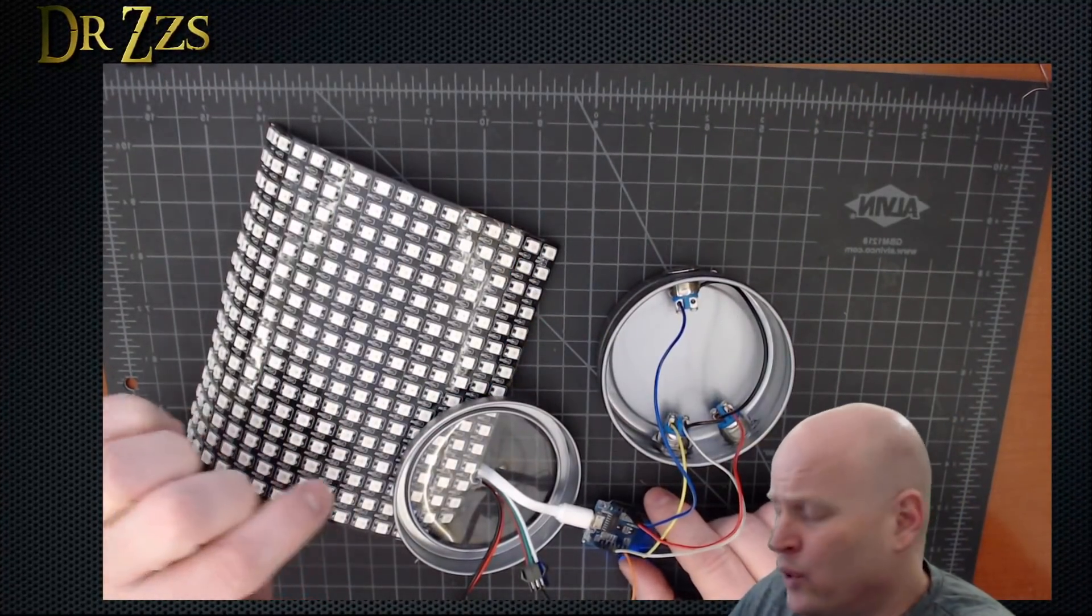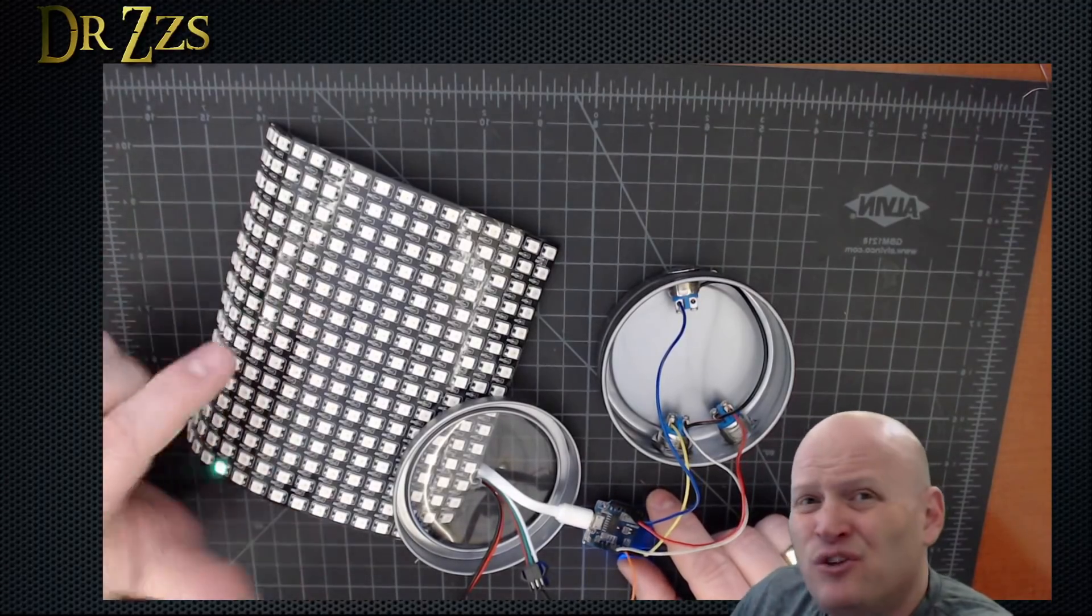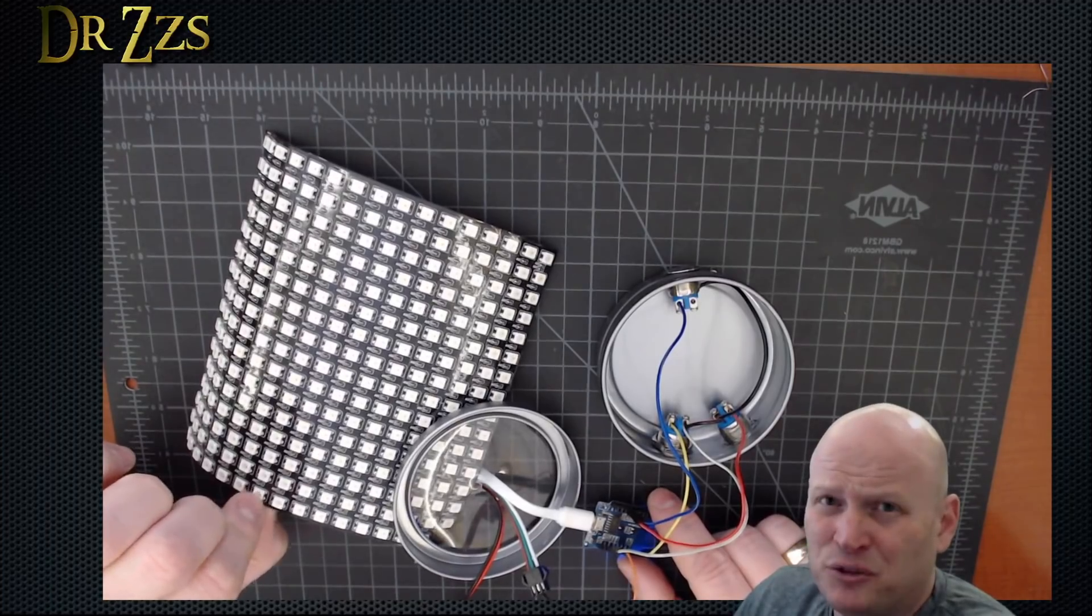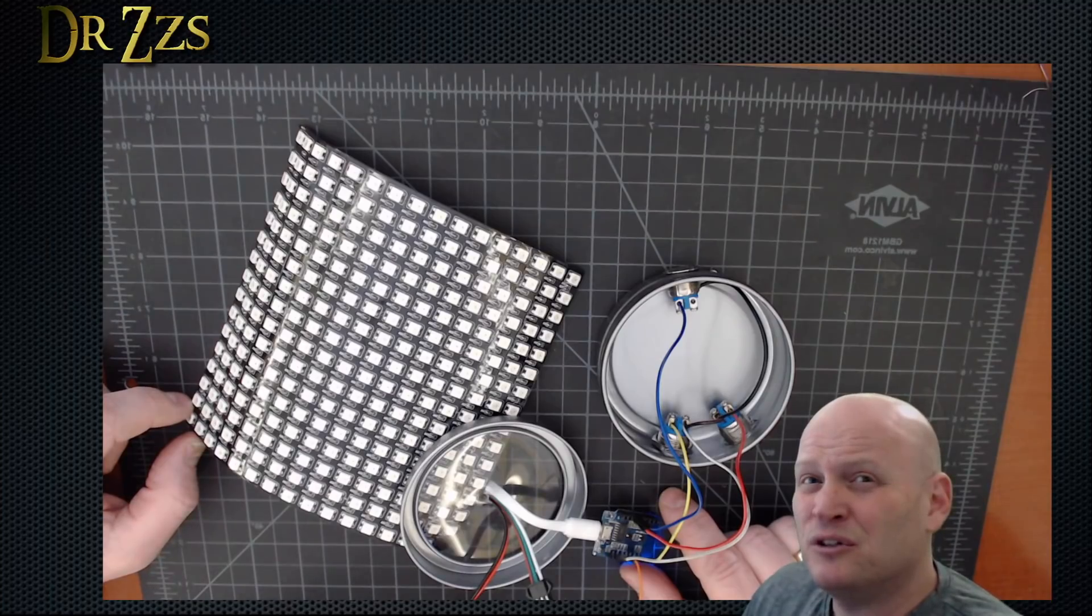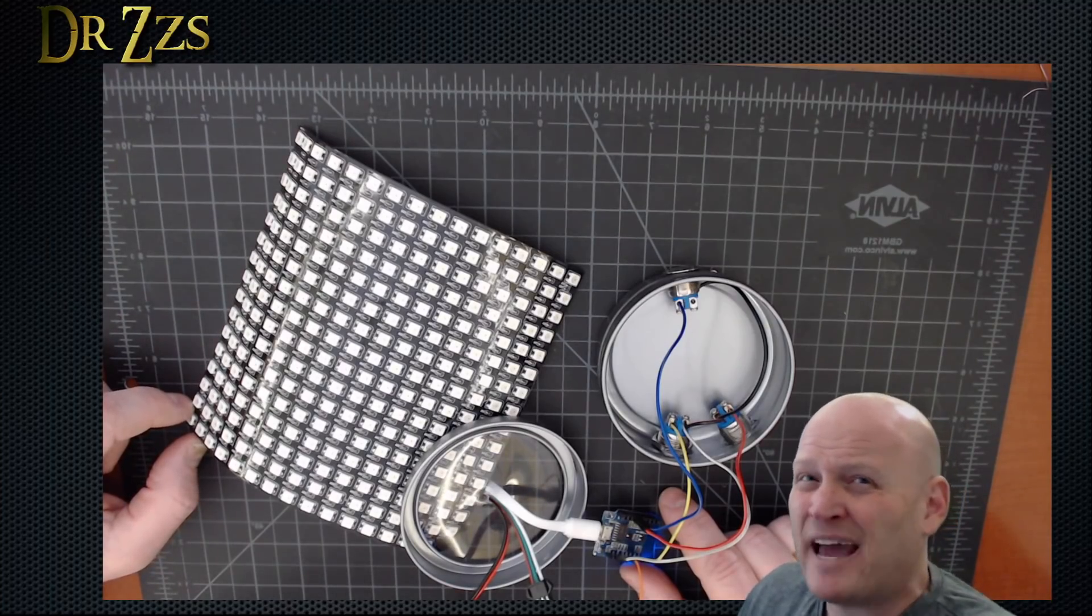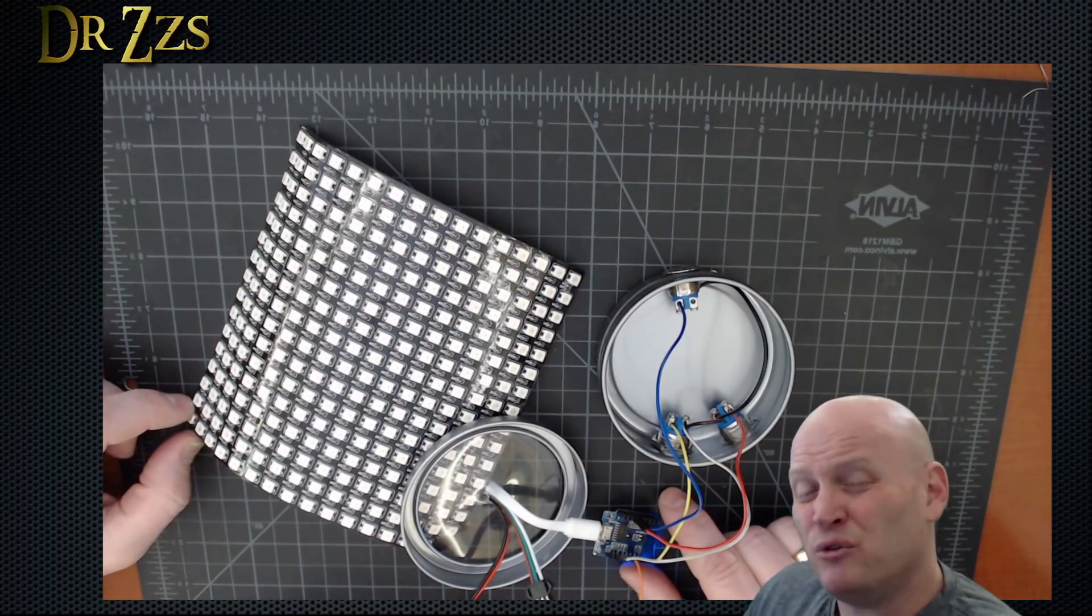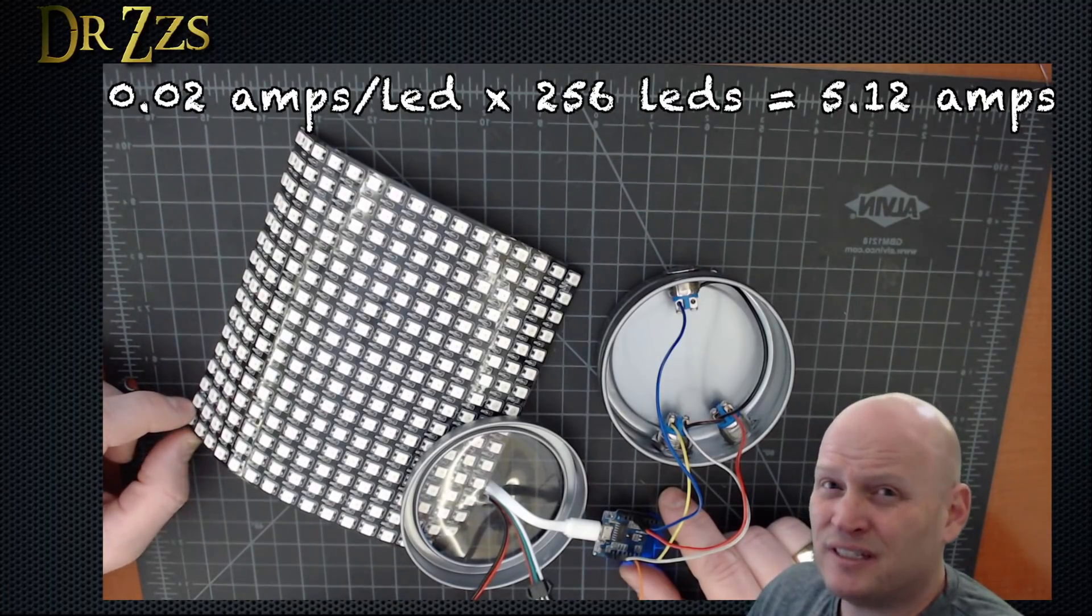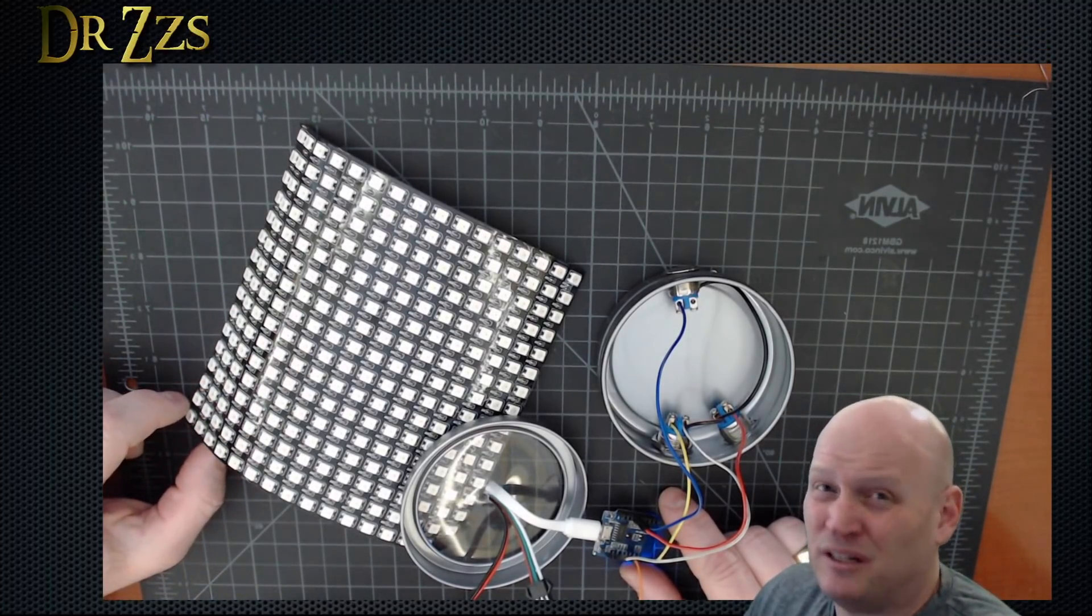A couple of things to tell you about here with the hardware part of it. One thing is if you use a matrix like this, there are 256 LEDs on this matrix. Each LED is going to use probably on average about 20 milliamps with a maximum of probably around 50, maybe 60 milliamps a piece. So if you do that math, 0.02 amps times 256 is going to be just over 5 amps. So when you're sizing a power supply for this, make sure you get one that's big enough.